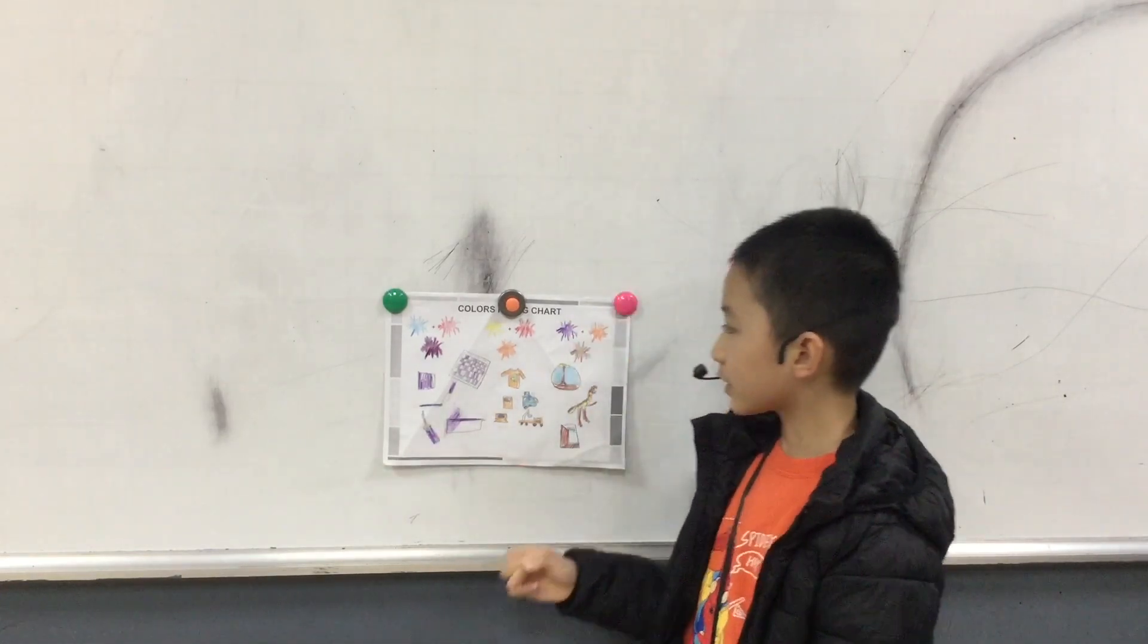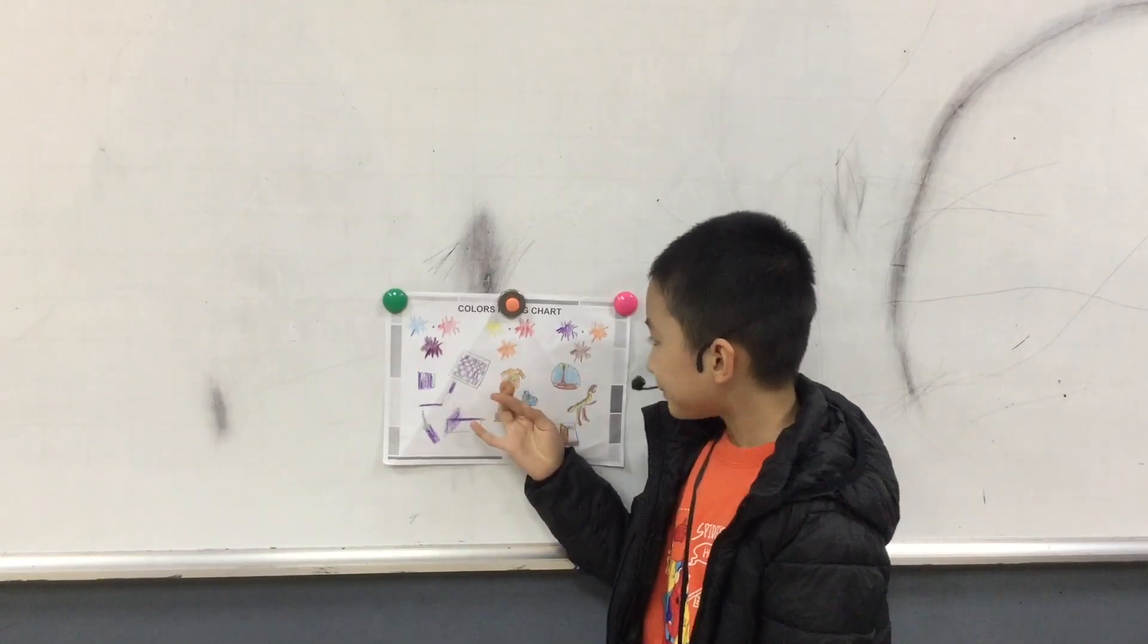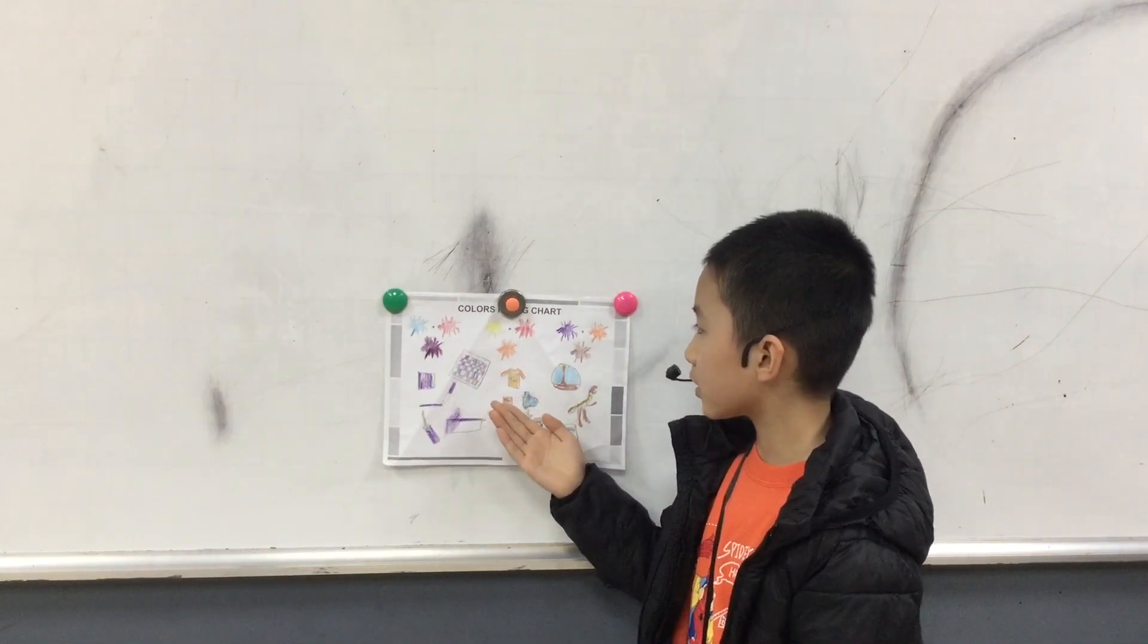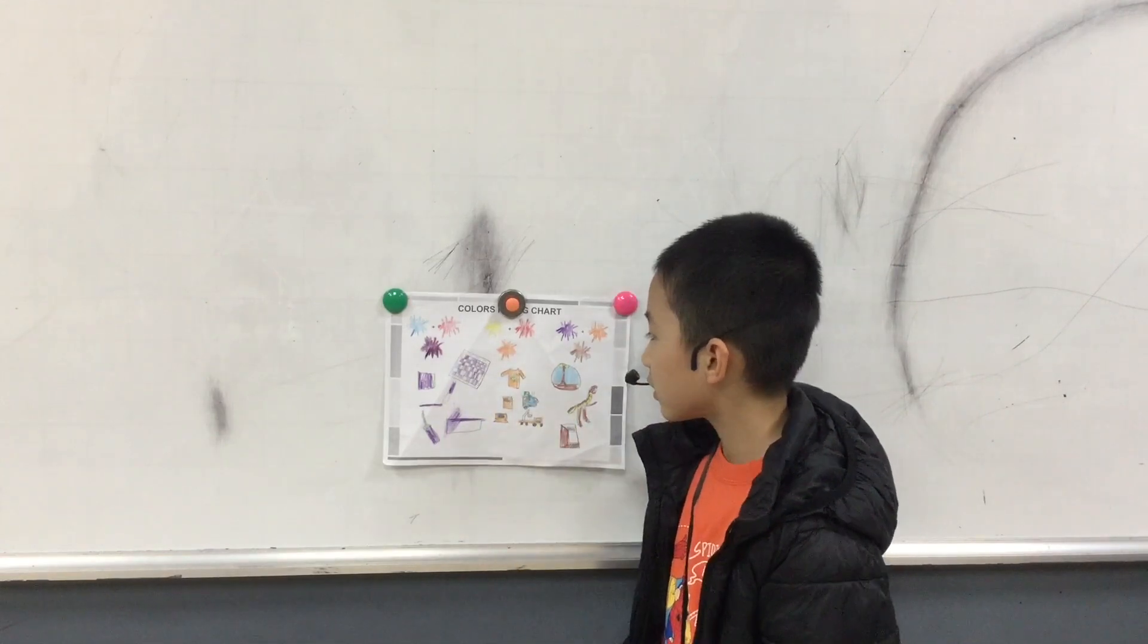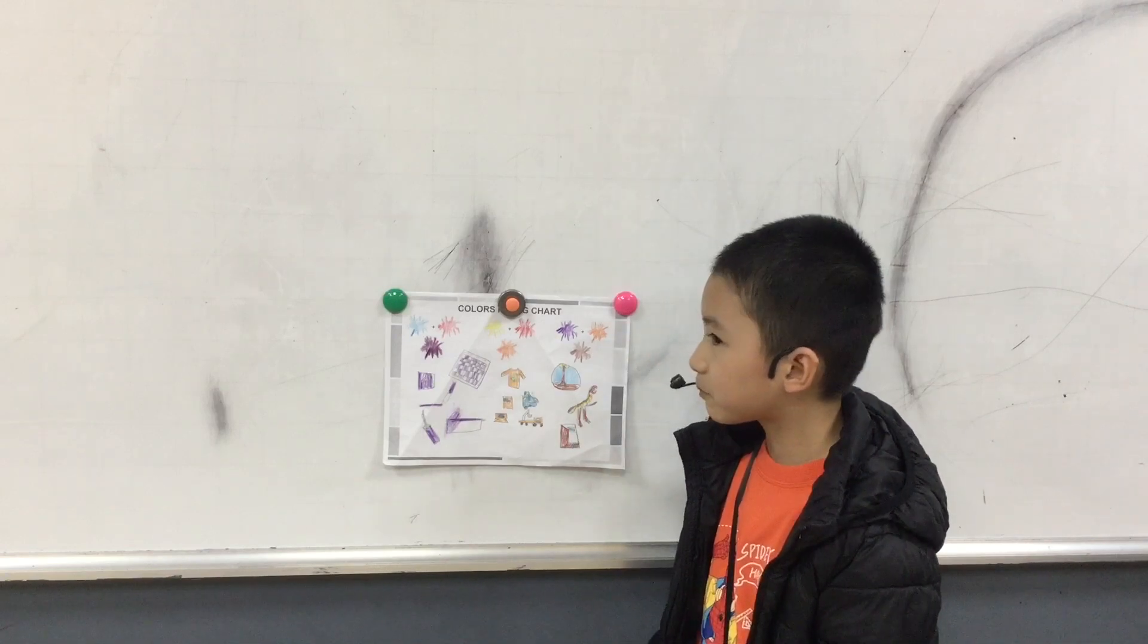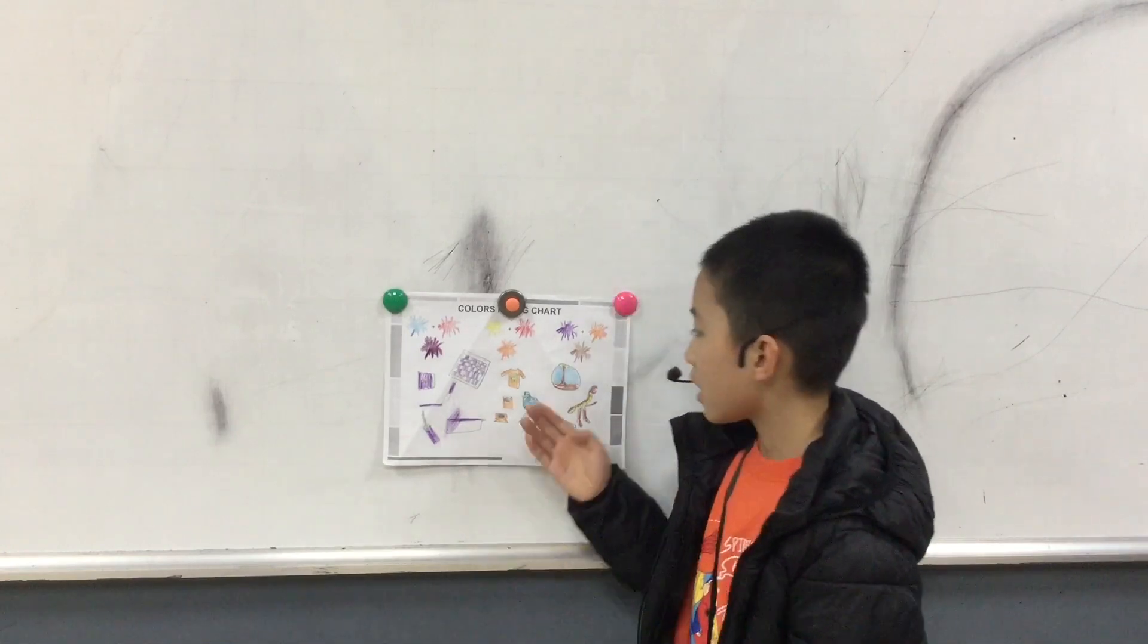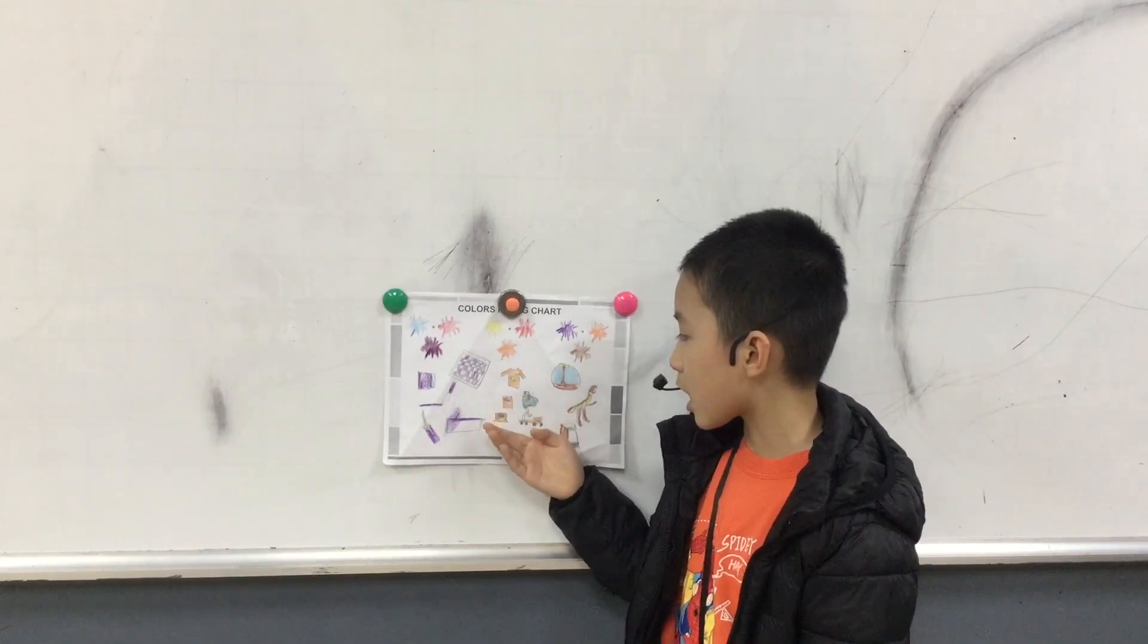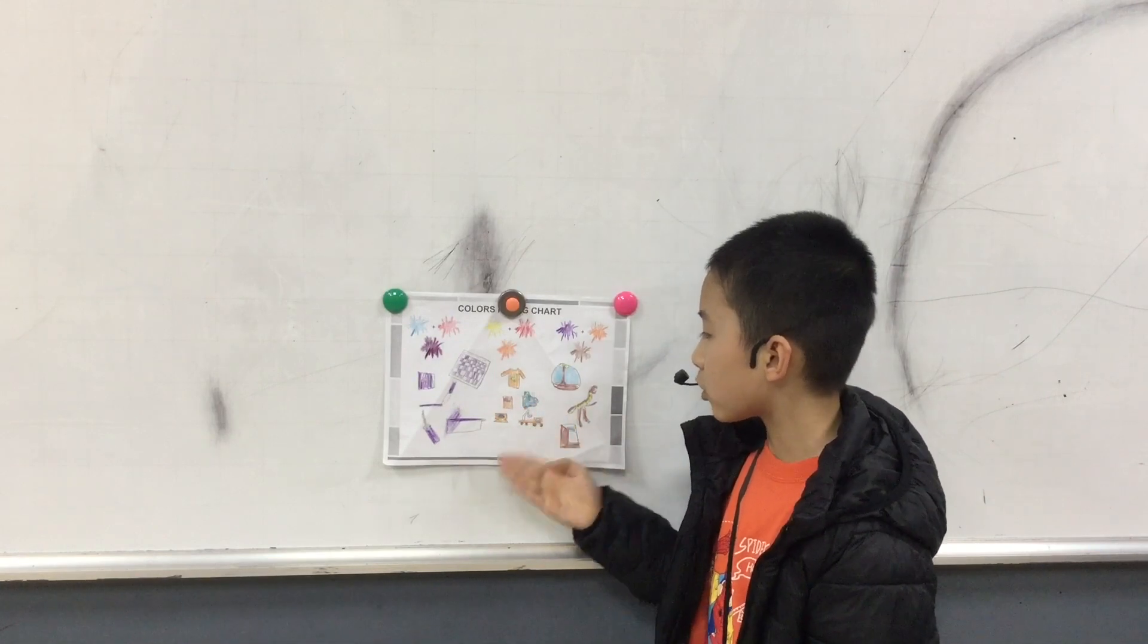The second color is orange. Orange is a warm color. I can find orange in my t-shirt, my car, my sneakers, my game and my tow truck.